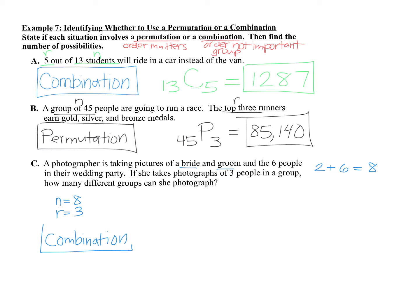And we have 8C3. We can put that into the graphing calculator again, and 8C3 ends up being 56. So there are 56 different groups of 3 that the photographer could take that would include 3 people out of the bride, the groom, and the 6 people in their wedding party.